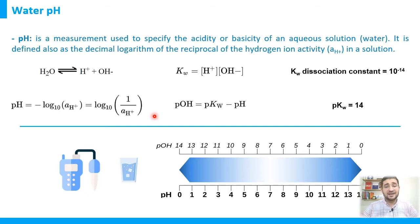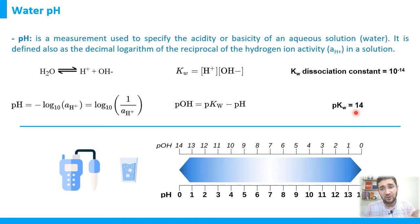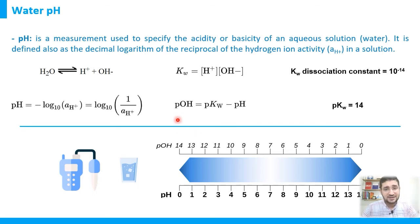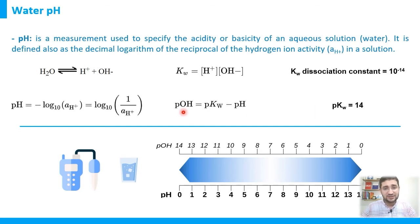Based on this definition, pOH equals pKw minus pH, where pKw is the logarithm of the dissociation constant of water. For example, if the pH of water is 7, then pOH equals 14 minus 7, which gives pOH = 7, since pKw of water is 14.